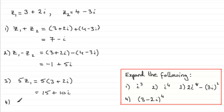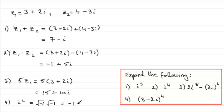In part 4, you're going to come across things like i squared. What's that going to be? Well, we know that i is the square root of minus 1. So we've got the square root of minus 1 multiplied by the square root of minus 1, and this is going to give us simply minus 1. We'll find that we'll be using this in questions like this.